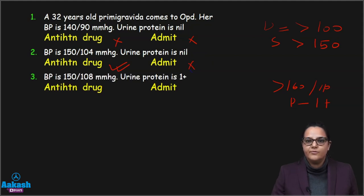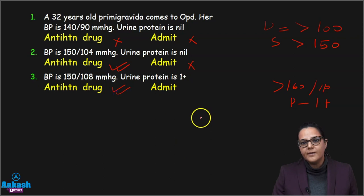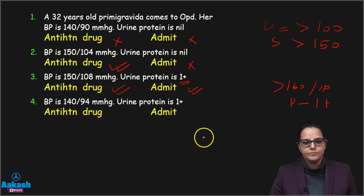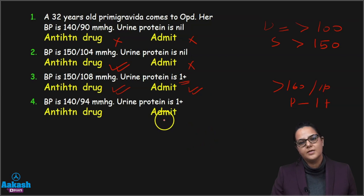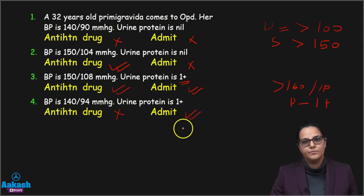Case 3: BP 150/108, urine protein 1+. We start antihypertensives because diastolic is more than 100. Do we admit? Yes — because urine protein is 1+ and she is a case of preeclampsia. Case 4: BP 140/94, urine protein 1+. We will not start antihypertensives but we will definitely admit the patient for further workup and monitoring.